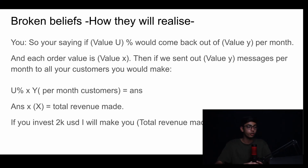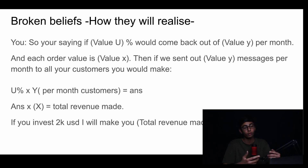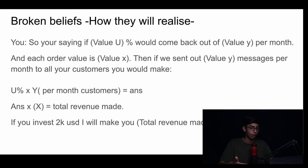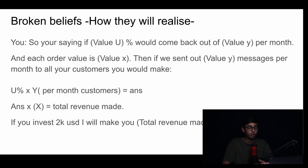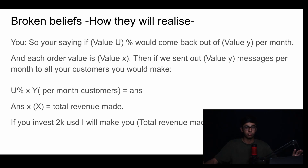This is you talking to your client. You would say: 'So you're saying if value U percentage would come back out of value Y customers per month, and each order value is value X — the amount people pay per order — then if we sent out value Y messages to all your customers, you would make...' and then you do the calculations using their information to identify the total revenue. Then you'd word it to them: 'If you can invest $2k USD, I will make you [total revenue] per month.' This is very essential to word it this way — if you just go up saying 'pay me $5k and I'll make you this much,' they won't agree.